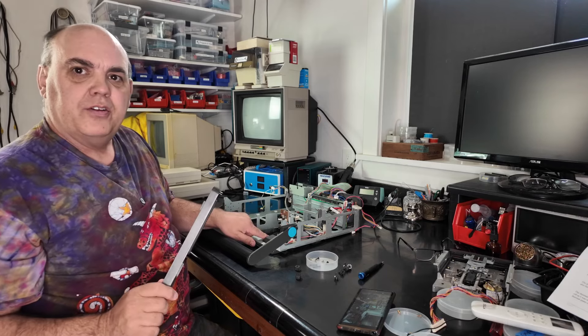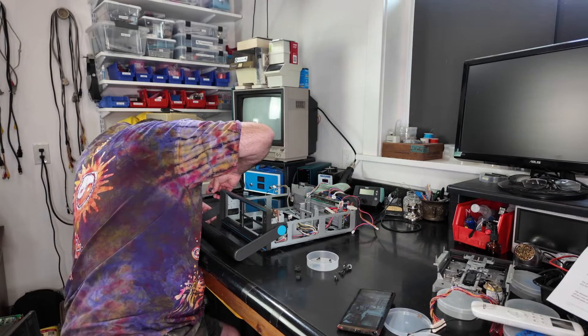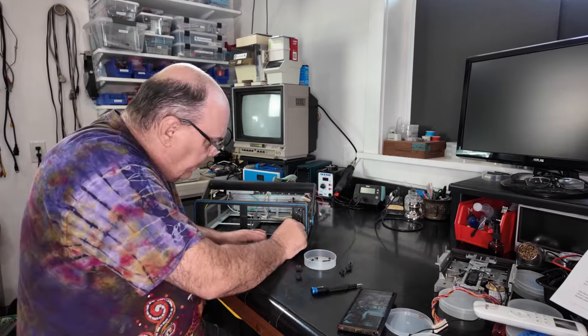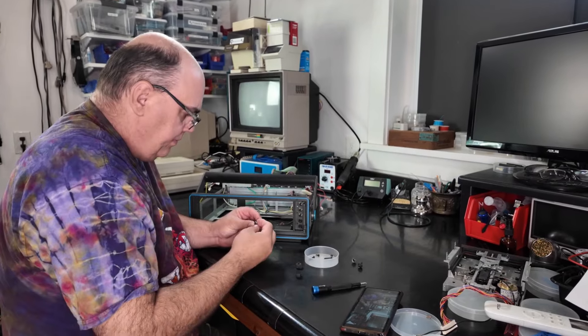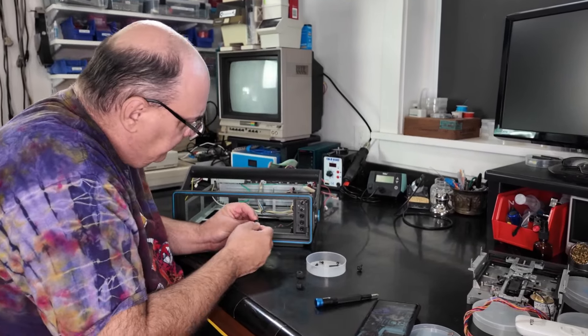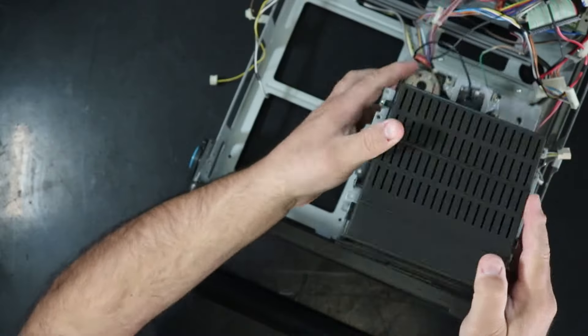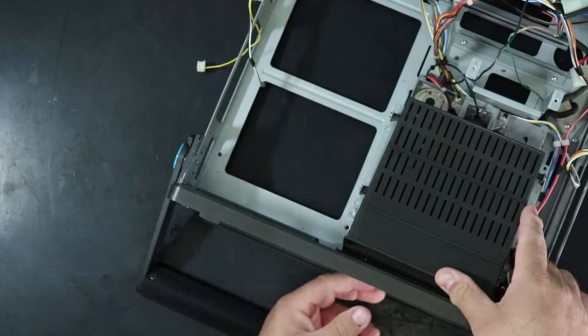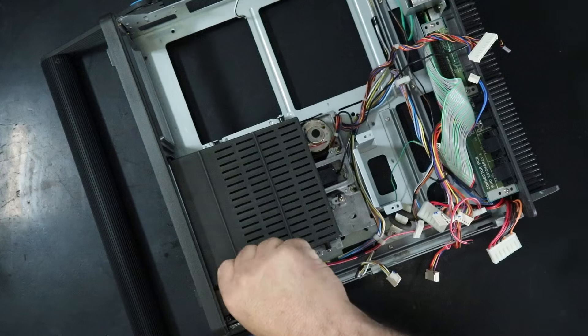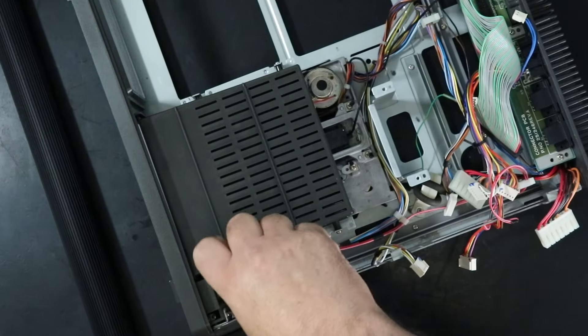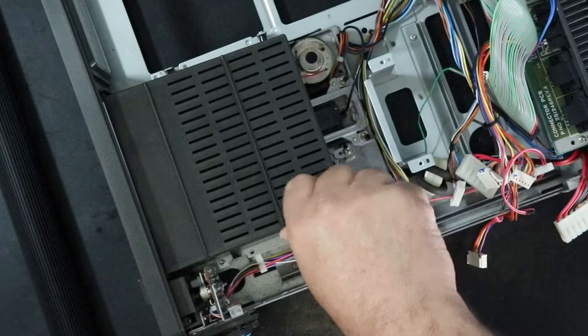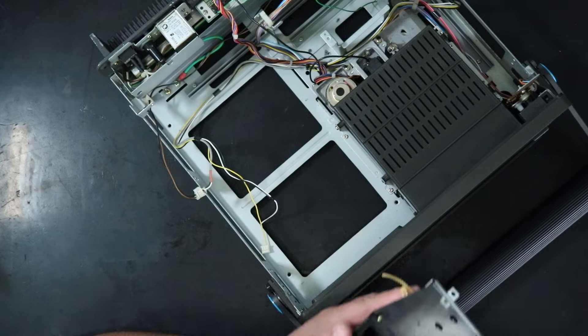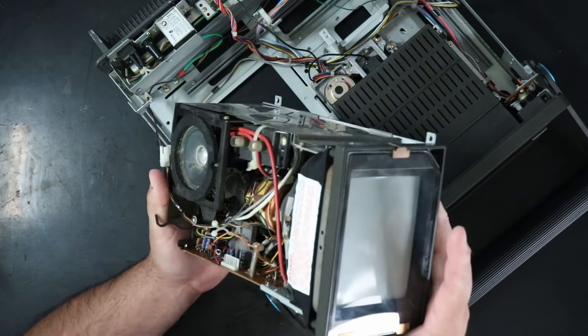I figured while I'm at it I should go ahead and get the front cover on. There's a couple of screws that go down in under the drive. Okay floppy drive's in. Next up CRT.